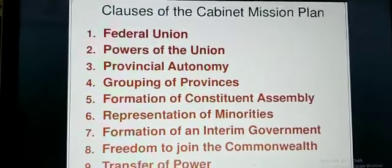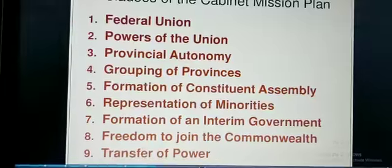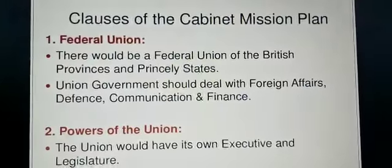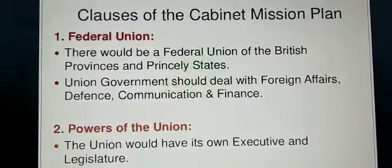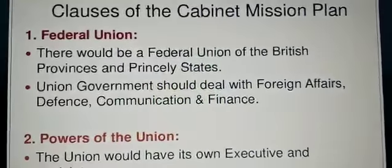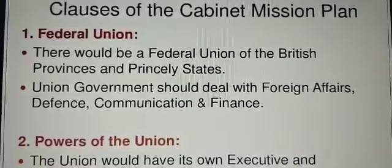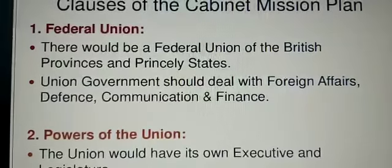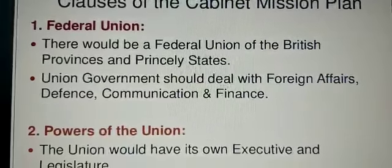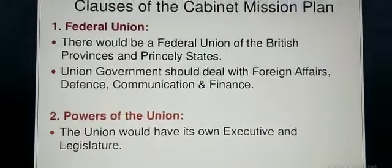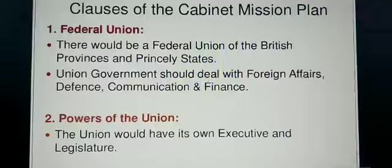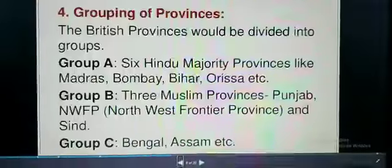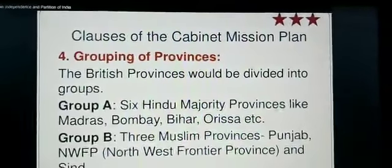The chapter is very very important. Now we will see the next slide which gives detail on the clauses of the Cabinet Mission Plan. The first clause is federal union: there would be a federal union of the British provinces and princely states, and the union government would deal with foreign affairs, defense, communication, and finance. The second clause, power of union, states that the union would have its own executive and legislature.